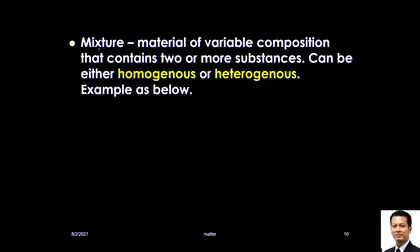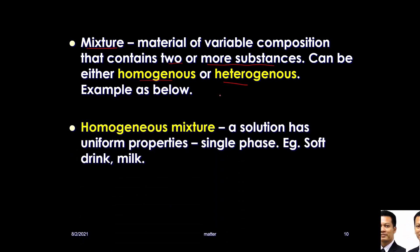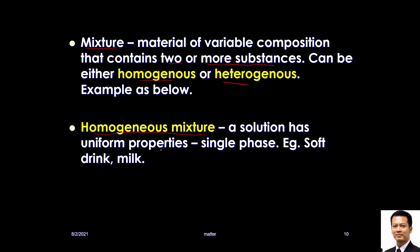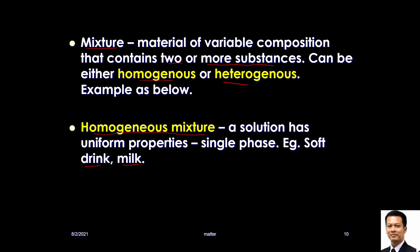A mixture is a material of variable composition that contains two or more substances, and can be homogeneous or heterogeneous. A homogeneous mixture is a solution that has uniform properties — homogeneous means uniform, you cannot see the separation between components. For example, soft drink like Coca-Cola — you cannot see any layer because everything is uniformly mixed. Milk also appears white; you cannot see the protein or water separately because it is uniformly mixed.